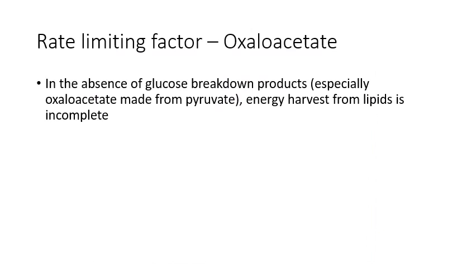By this point you've probably put two and two together regarding oxaloacetate, but just to point out: you cannot completely harvest energy from lipids without oxaloacetate to pick up those acetyl coenzyme A molecules made from beta oxidation. To make oxaloacetate you need pyruvate, and pyruvate is a glucose breakdown product. So ironically, you cannot break down fat in the absence of glucose breakdown. It would be quite fun to completely starve yourself of glucose in the hope that your body gets rid of all your excess fat, but paradoxically you're going to need some glucose available to help break it down.